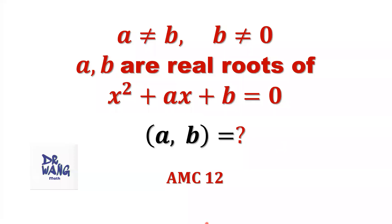Hello everyone, I'm Dr. Wen. Here is the question: if a does not equal to b, and b does not equal to zero, a and b are two real roots of x squared plus ax plus b equals zero. What is the value of a and b?